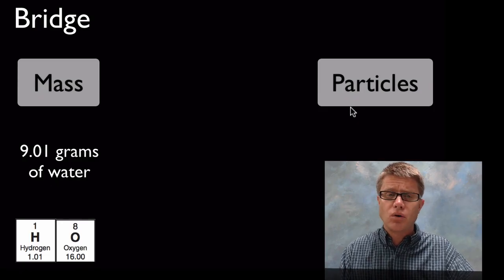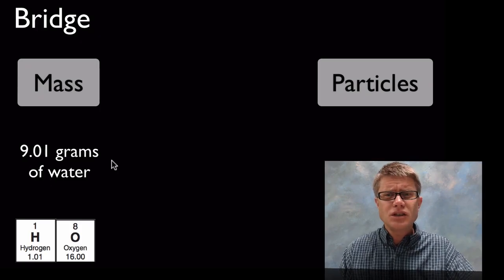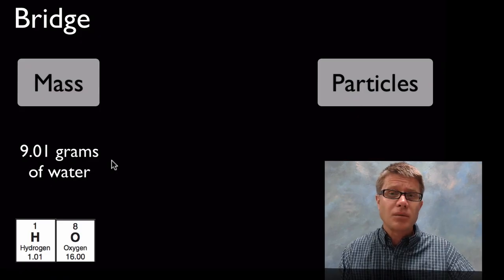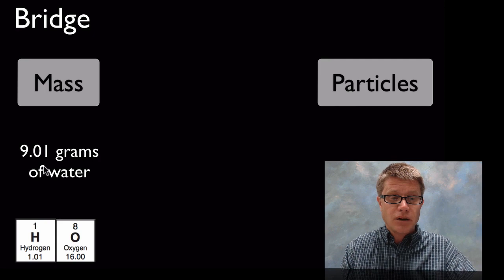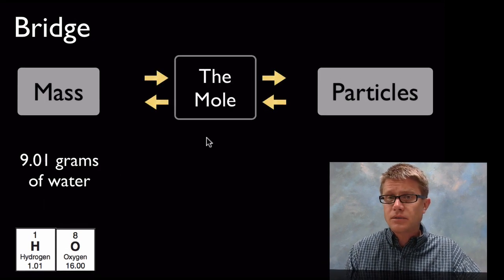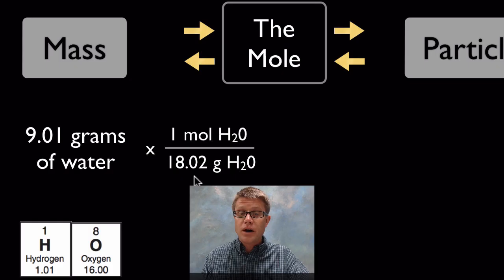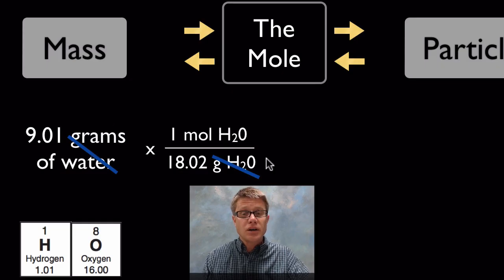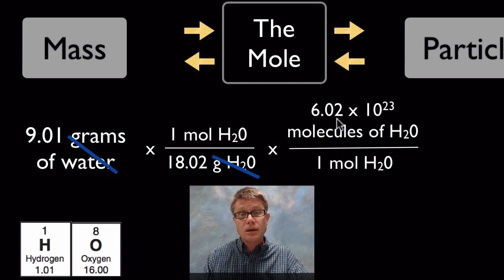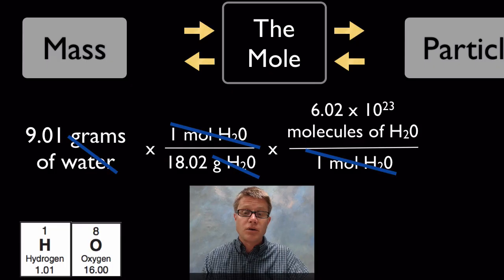This is where people sometimes get confused about the mole when making mole conversions. Let's say I have 9.01 grams of water — about two teaspoonfuls — and I want to figure out how many molecules of water are found inside. The mole acts as a bridge to convert that into a number of particles. First, we use this mole conversion: 1 mole of anything is its atomic mass in grams, so 1 mole of water is 18.02 grams — that's 16 from oxygen plus 2 from the two hydrogens. We cancel the grams to get moles of water, then we use Avogadro's number: 1 mole equals Avogadro's number of molecules. We cross off the moles and solve for the number of molecules.